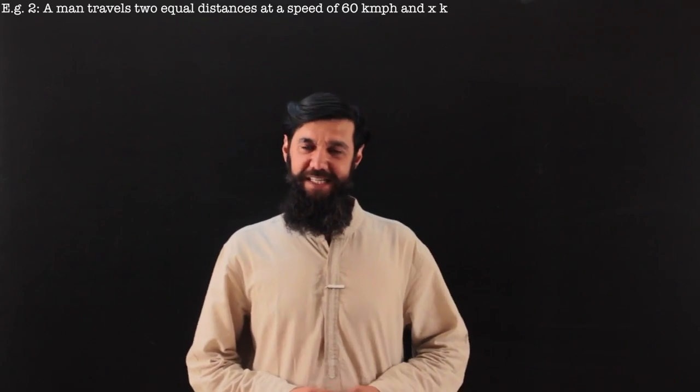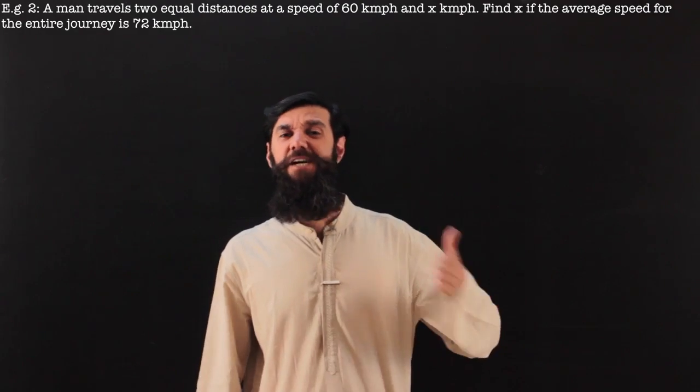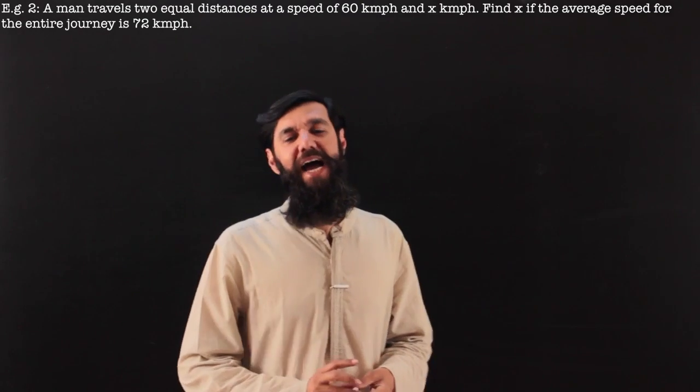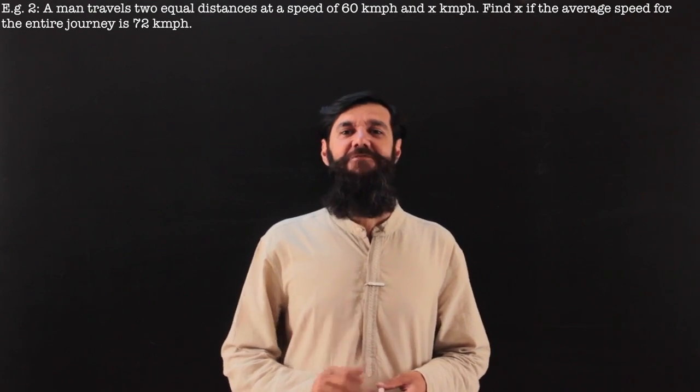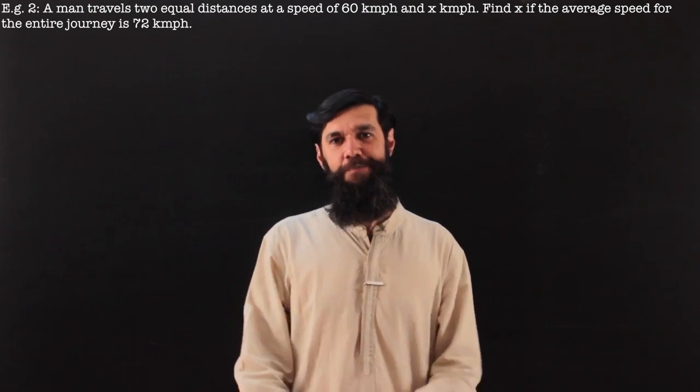Example 2. A man travels two equal distances at a speed of 60 kilometers per hour and x kilometers per hour. Find x if his average speed is 72 kilometers per hour.